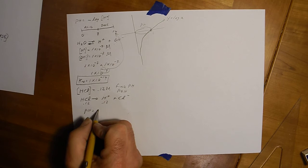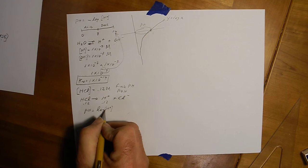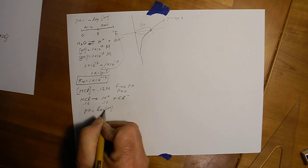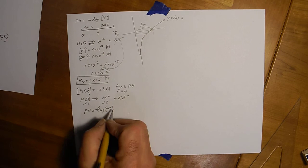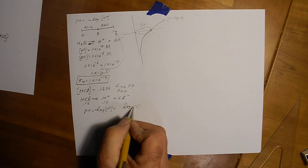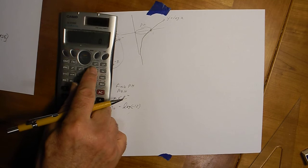The pH is equal to the log of the hydrogen ion times negative 1. Because it's negative, and when you times by negative 1, it makes it positive. So that equals the log of 0.12 times the negative 1. Do it on calculator. Log of 0.12.